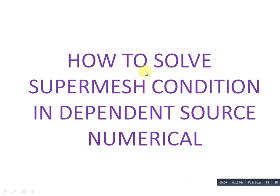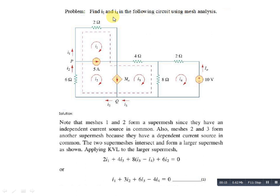Hello friends. In this video we are going to discuss how to solve a super mesh condition in a dependent source numerical. It's a very important and interesting question: find I1 and I4 in the following circuit using mesh analysis. In this question we have one dependent current source with value 3Ia, where Ia depends on the independent 10-volt source. Super mesh conditions are present — I1 and I2 form one super mesh, and I2 and I3 also have a super mesh condition with the dependent current source.